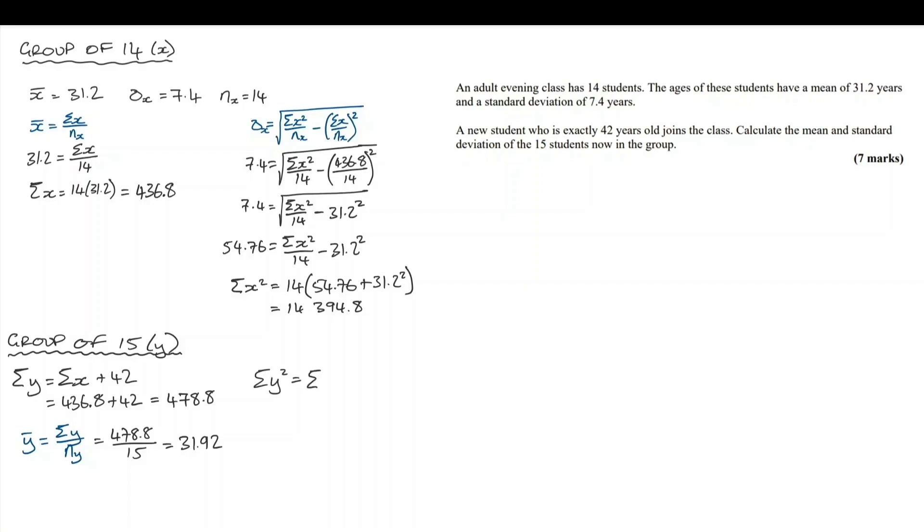We're going to do a similar thing for the sum of y squared. We're going to include the person who was 42. So it's the sum of x squared plus 42 squared.